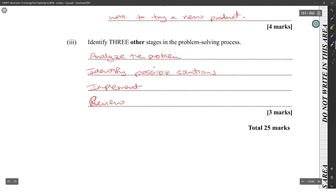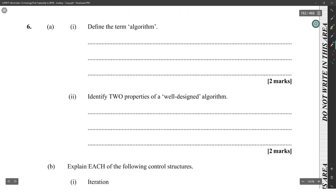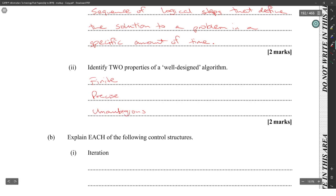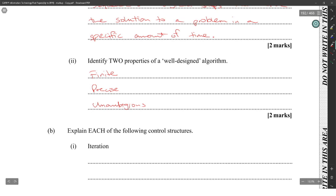Define algorithm. An algorithm is a sequence of logical steps that define the solution to a problem in a specific amount of time. Identify two properties of a well-designed algorithm: finite size, unambiguous, have a start and termination.